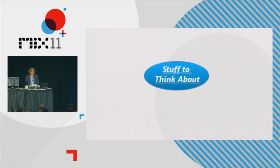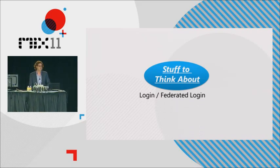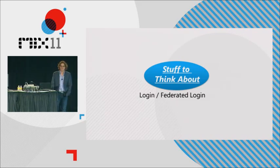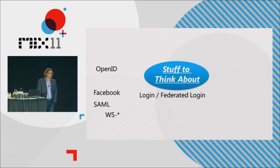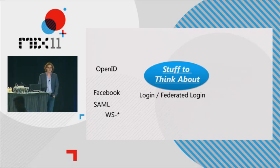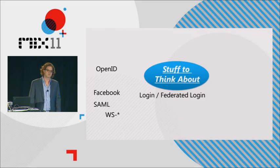When you start to think about identity on the web, there are some things that probably pop into your head. One of the first is how you're going to authenticate your users - how a user will log into your site or service. Do you care about federated login or accepting an identity from a third party like OpenID? There are a bunch of different protocols out there: OpenID is prolific, Facebook is huge, SAML for enterprise identity, and WS-star also for enterprise identity.